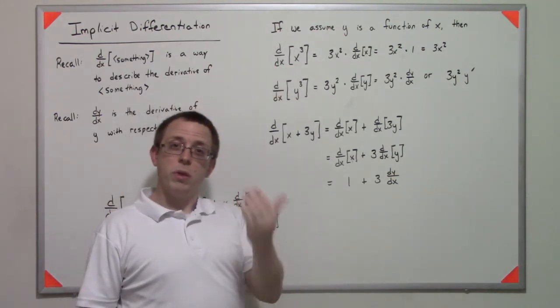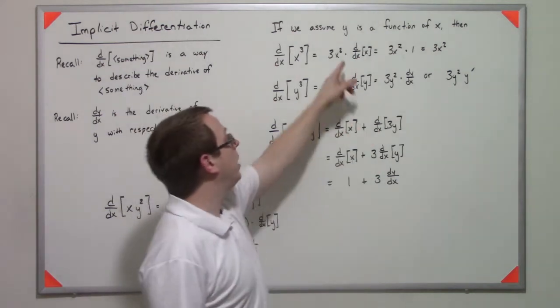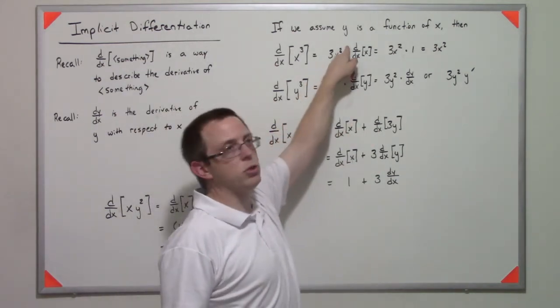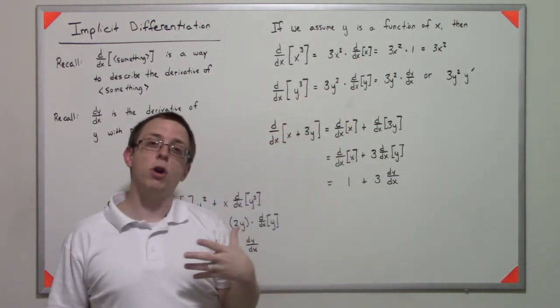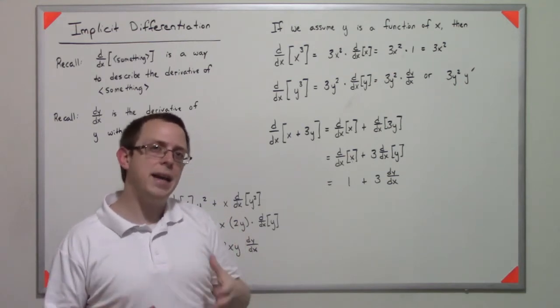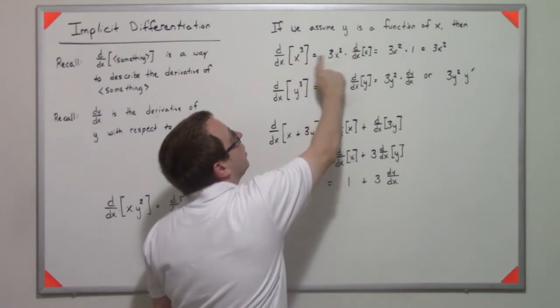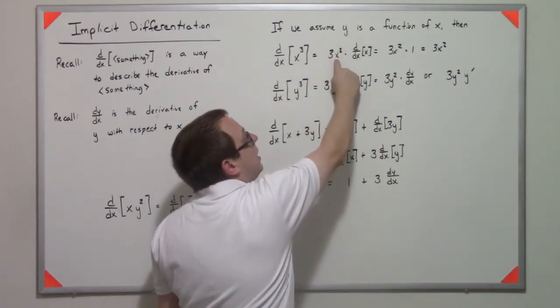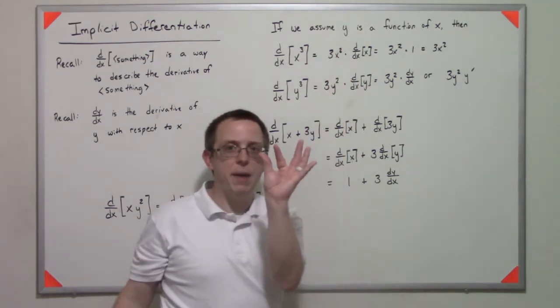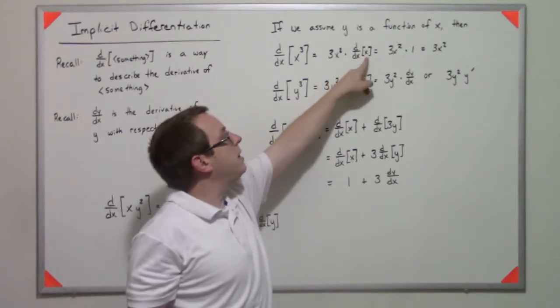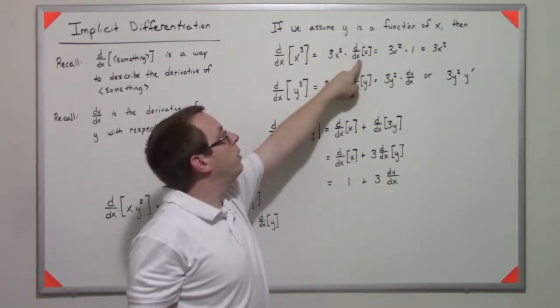We normally think about the power rule by saying we bring down the power, we subtract one from it. But if you recall with the chain rule, technically speaking what we're supposed to do is bring the power down, subtract one from it, and take the derivative of that piece to chain that piece on.